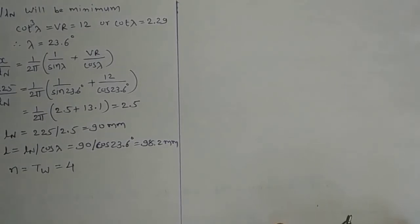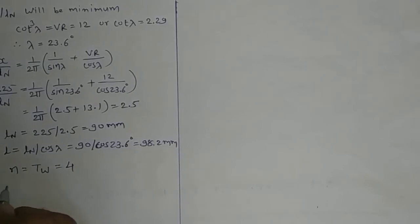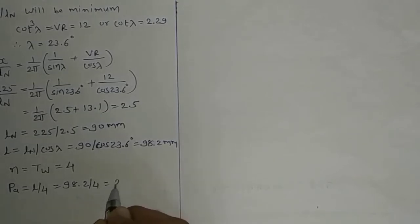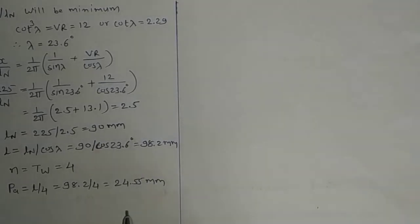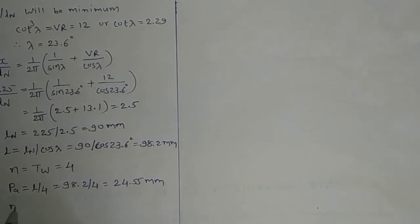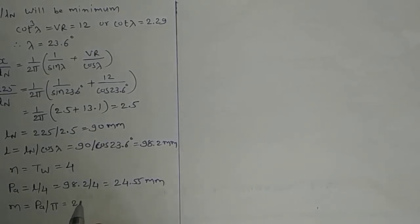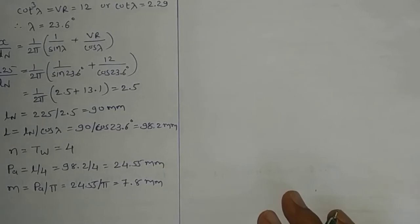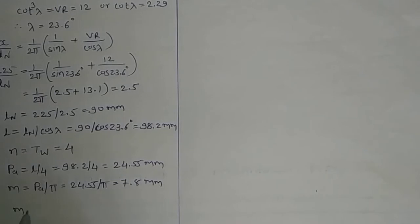Axial pitch P_A = L / T_W = 98.2 / 4 = 24.55 mm. Module M = P_A / π = 24.55 / π = 7.8 mm. Checking the standard value, the standard module M = 8 mm.